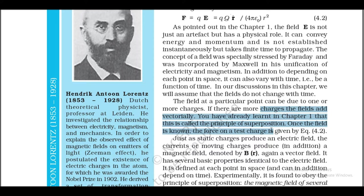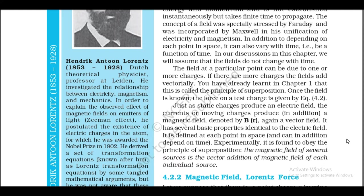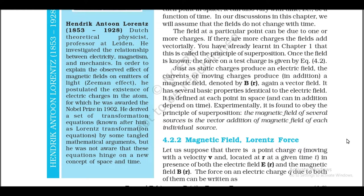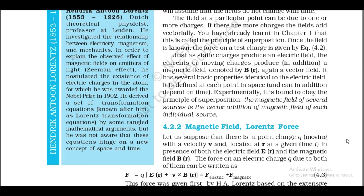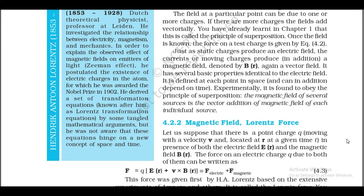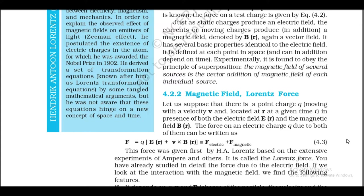Just as a static charge produces an electric field, a current or moving charge produces, in addition, a magnetic field denoted by B — again a vector field. It is defined at each point in space and can depend on time. Experimentally it is found to obey the principle of superposition: the magnetic field of several sources is the vector addition of the magnetic field of each individual source.